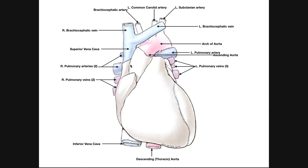Up here, where this large vein is going to be draining into the heart, would be where the patient's right atrium is. Over on this side would be where the patient's left atrium is. So atria are on top, closer to the base, and ventricles are on the bottom, closer to the apex of the heart.